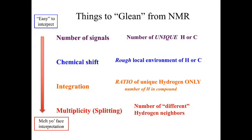Remember when it's coming to NMR, we've got four primary categories that we need to be looking at. We talked about the number of signals. We'll look at chemical shift in this section, integration, and then multiplicity.